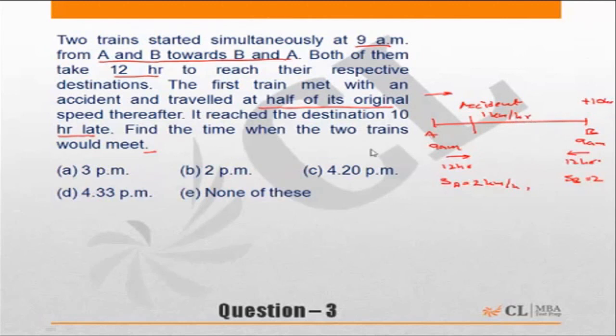Since we have assumed the speed of the train to be 2 km per hour and the trains take 12 hours to cover the distance, that means the distance AB is equal to 24 km.